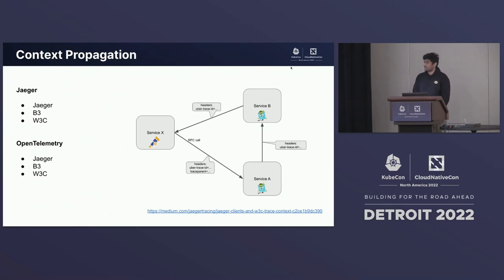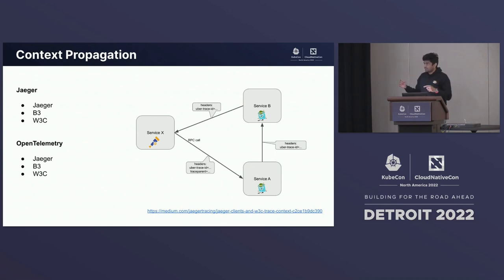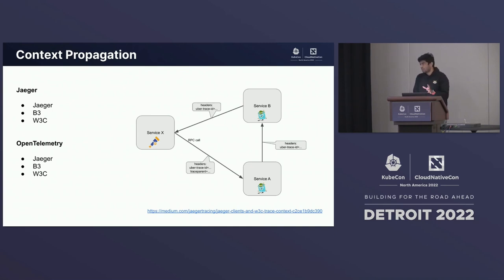The question of context propagation: if you have tens of applications already instrumented using Jaeger and you're starting a new application from scratch, do you start with Jaeger or OpenTelemetry? The recommendation is to start with OpenTelemetry, and context propagation just works because Jaeger supports Jaeger, B3, and W3C context propagation, and OpenTelemetry supports all three. If different applications talk to the same application using different context propagation formats, the OpenTelemetry SDK supports enabling multiple contexts simultaneously. There is also a Medium article explaining how to mix and match context propagation between applications.